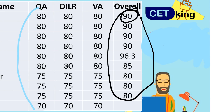Getting 90 percentile does not mean you will get an IIM call, because there are other things as well like your academic record — 10th and 12th marks — all of these things are considered for your IIM call. But to give you an idea, these are the cut-offs so that you know where you stand.